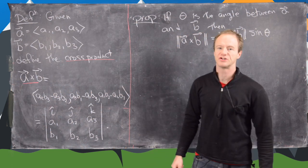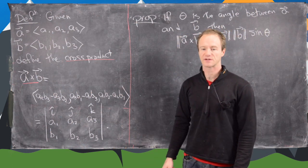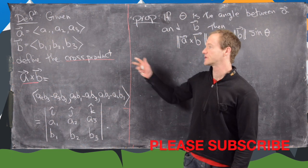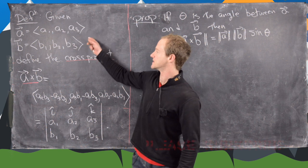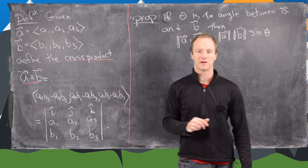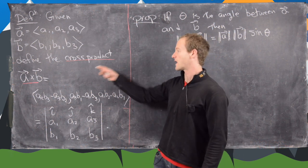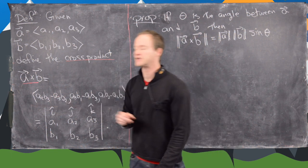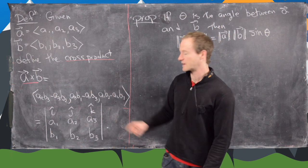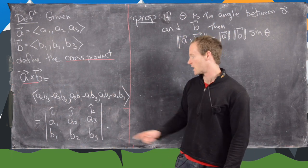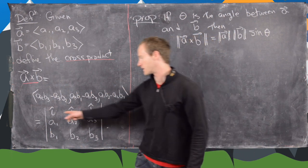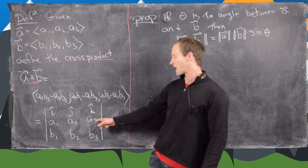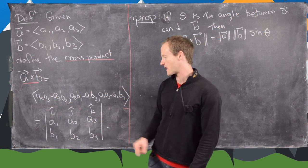In this video we're going to look at a couple of geometric applications of the cross product in terms of finding areas and volumes. Given two vectors a and b whose components are defined, we can define the cross product where we have combinations of the components of a and b, and also a determinant version using unit basis vectors i, j, k in the first row, vector a in the second row, and vector b in the third row.